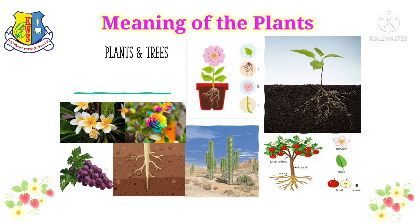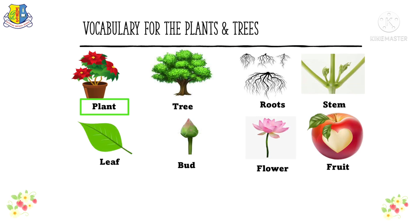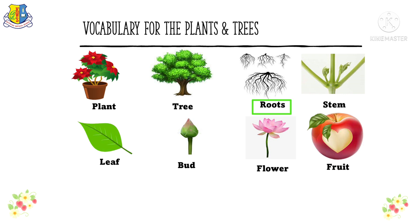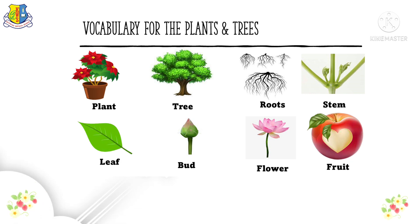Okay, let's start with the vocabulary. Plant, tree, roots, stem, leaf, bud, flower, and fruit.